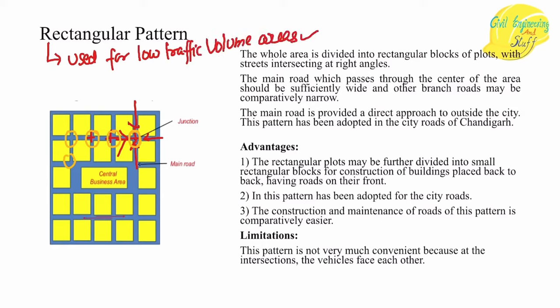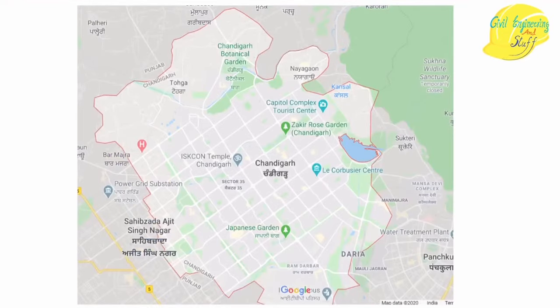Therefore, this type of road pattern should be used for low traffic volume areas — small cities and cities having low traffic volume, where the rectangular pattern proves to be very successful. Apart from that, proper traffic management systems must be in place, with traffic signs and traffic signals at the proper locations to warn drivers that there is an intersection point ahead. In India, Chandigarh has the rectangular road pattern, with the whole city divided into rectangular blocks and a road network running across the city.